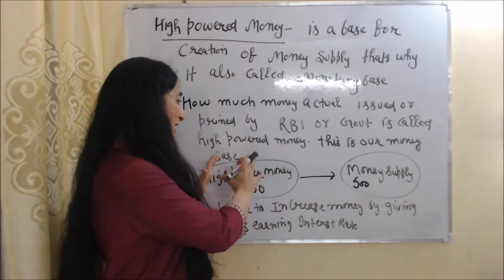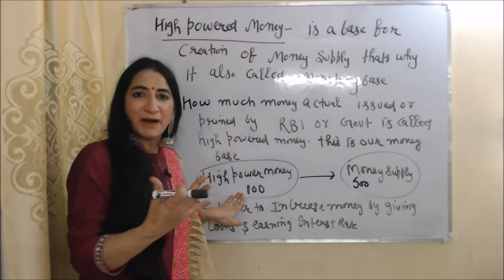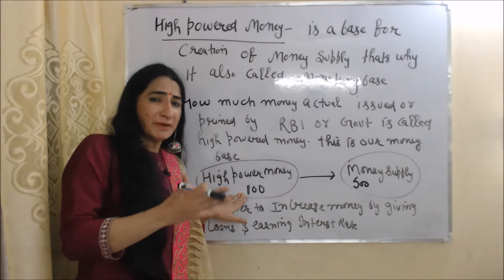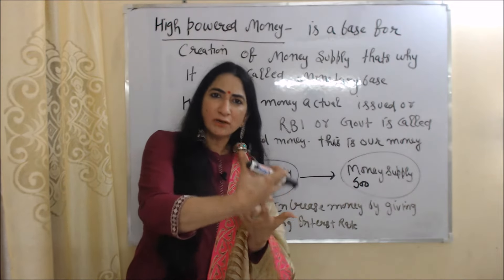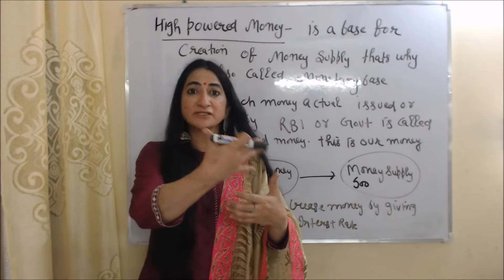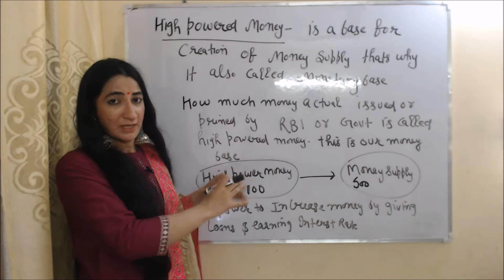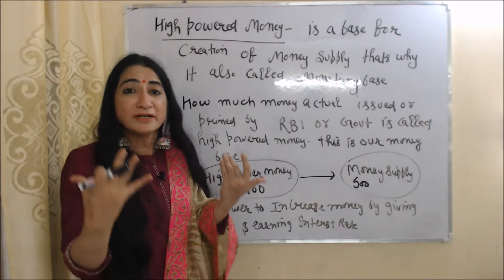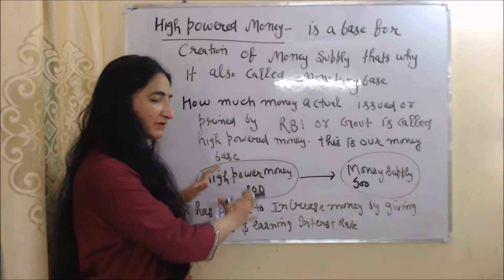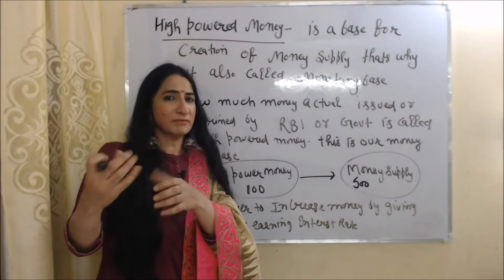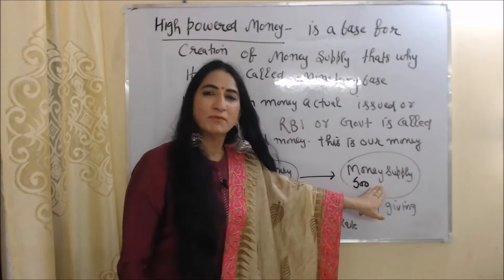Don't confuse between high powered money and money supply. For example, our monetary base — our high powered money — is 100 rupees. This money is actually issued or printed by the government or RBI. As we know, banks have the power to expand money by giving loans to people and earning interest, and by investing in government securities. They can make 500 rupees from this 100 rupees. When the bank makes 500 rupees from this 100 rupees, that money is called money supply. High powered money is our money base — the actual money issued by government or RBI. When banks expand this money by the process of money creation, that money is called money supply.